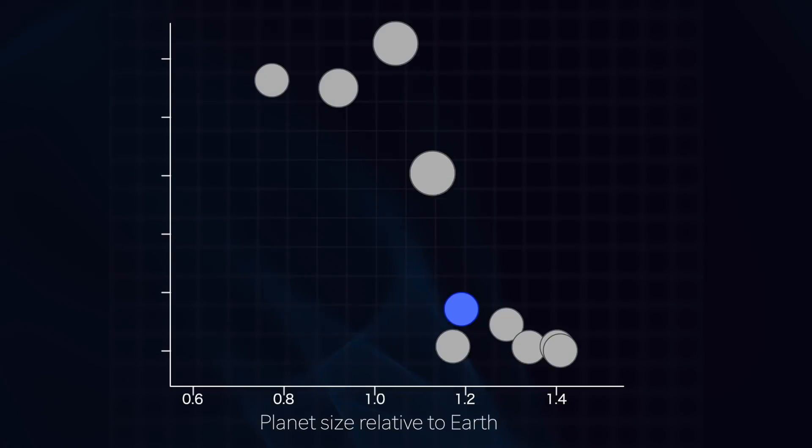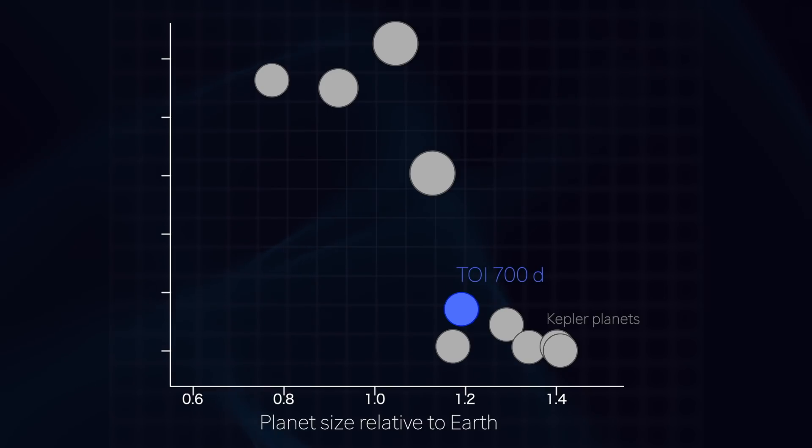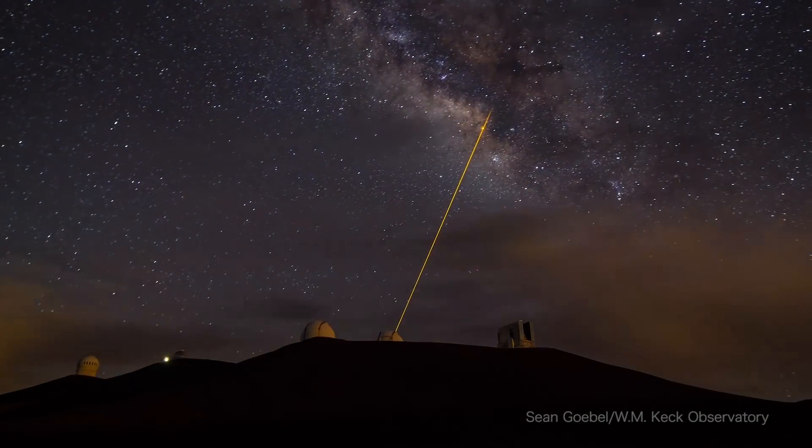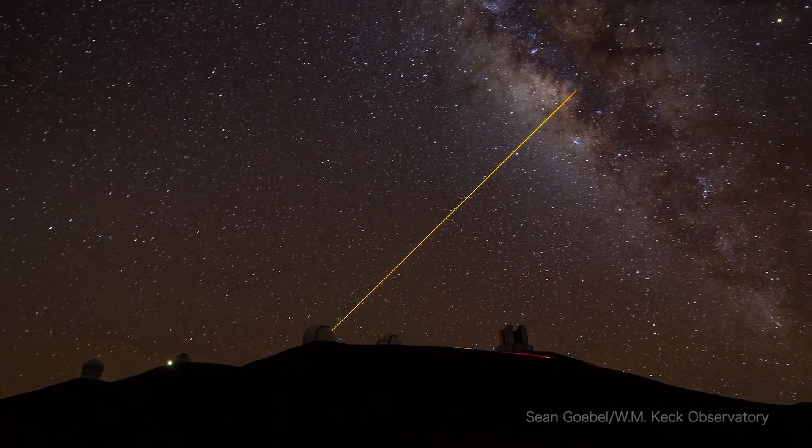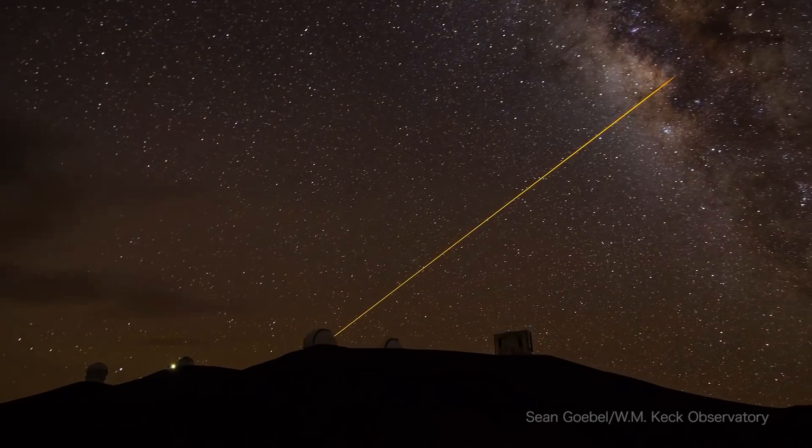TOI-700d is one of only a few Earth-sized planets found in potential habitable zones. Others include discoveries by Kepler and several planets in the TRAPPIST-1 system. Because TOI-700d is bright and nearby, the planets are good candidates for precise mass measurements by ground-based telescopes.